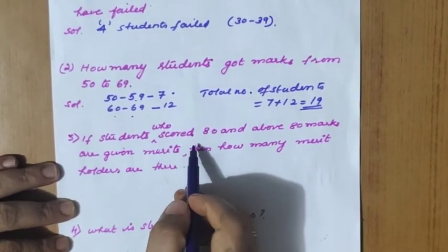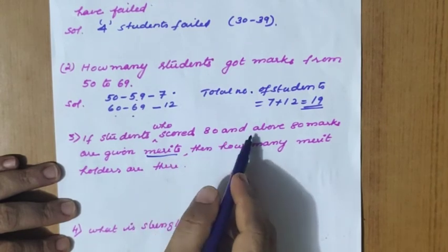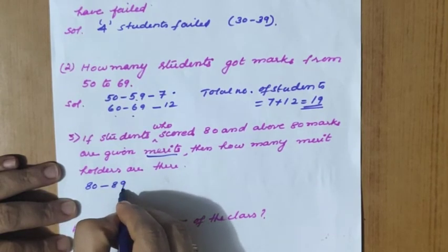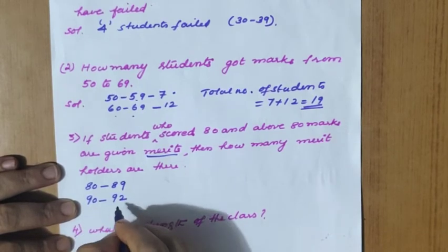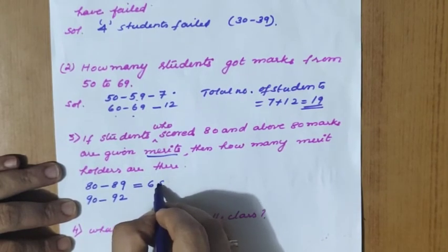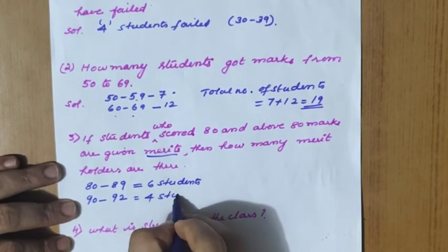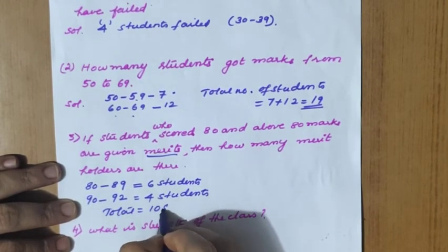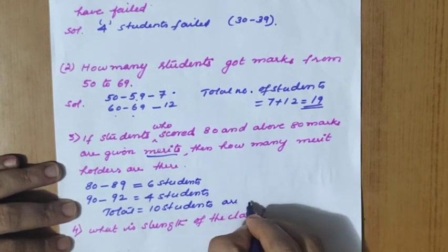If students scoring 80 and above are given merit, two categories qualify: 80–89 with 6 students and 90–92 with 4 students. Total merit holders = 6 + 4 = 10 students. So 10 students will be awarded merit.